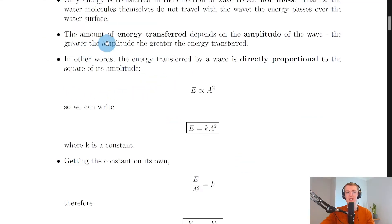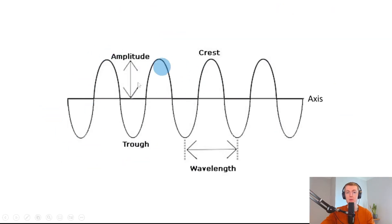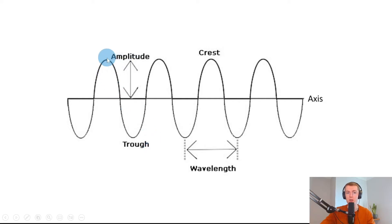The amount of energy transferred depends on the amplitude of the wave — the greater the amplitude, the greater the energy transferred. Let's remind ourselves of some parts of a transverse wave including crest, trough, amplitude and wavelength. The top point of a wave is called the crest, the bottom point is called the trough. The amplitude is half the vertical height of the wave — the distance from the crest to the axis or from the trough to the axis. The full vertical height goes from crest to trough, but amplitude is just half of that distance.